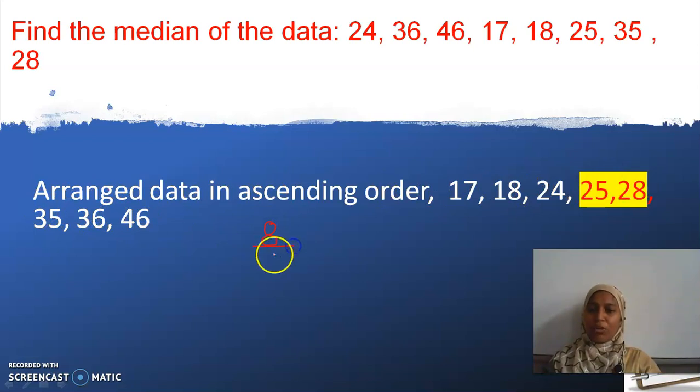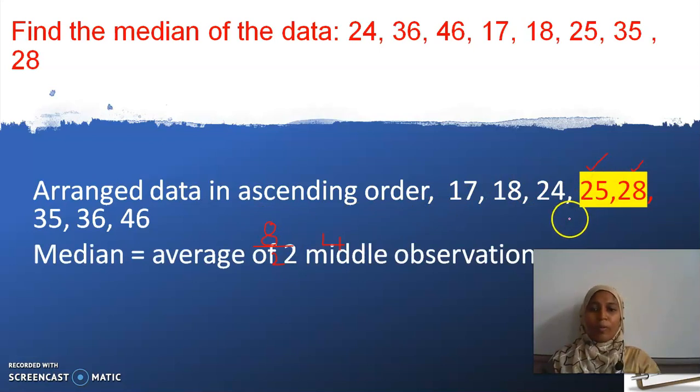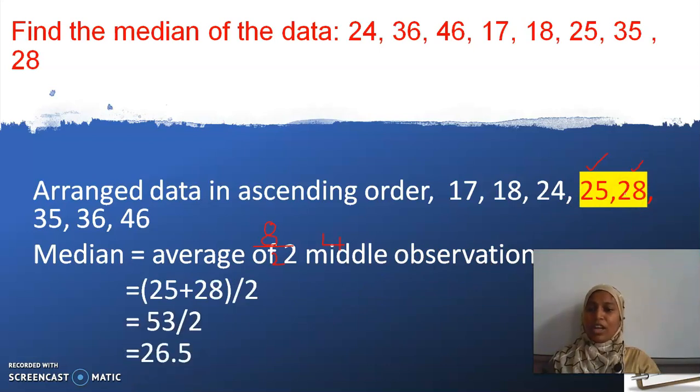8 divided by 2, what will I get? 4. Will you agree this is going to be the middle data? No my dear children. If I take this as the middle data, here I have 1, 2, 3, 4 observations. Here I have 3 observations. So when you have even number of observations, you have to select these two, find the average of these two. Add these two numbers, 25 and 28, and divide by 2 and you will get the answer. Hope you have learned.